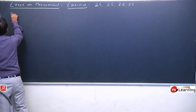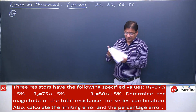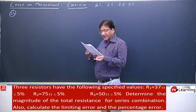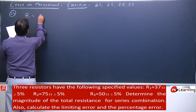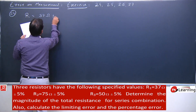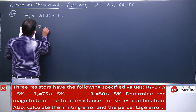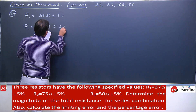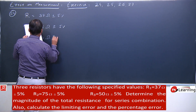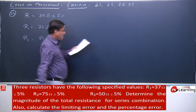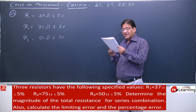Let us start reading problem number twenty-fourth. How does the problem read? Three resistors have the following specified values: R1 is 37 ohm plus or minus 5%, R2 is 75 ohm plus or minus 5%, R3 is 50 ohm plus or minus 5%. Determine the magnitude of total resistance for series combination.